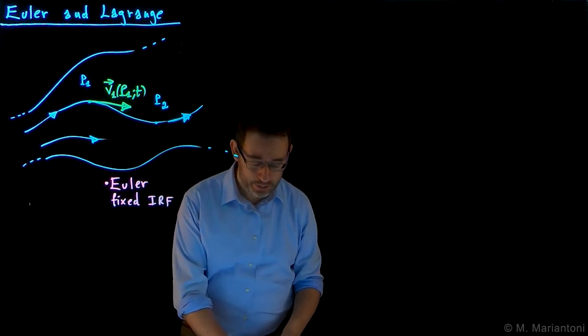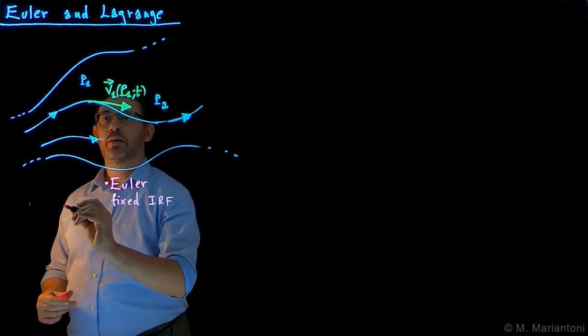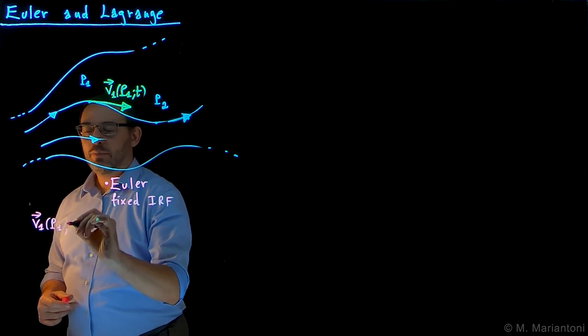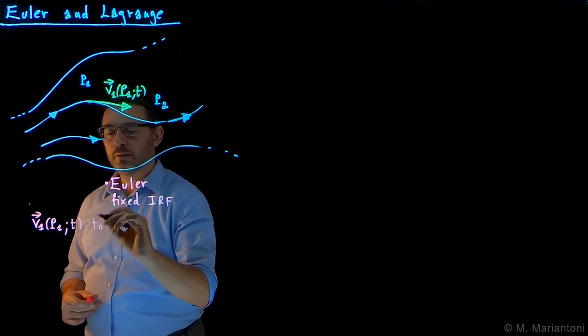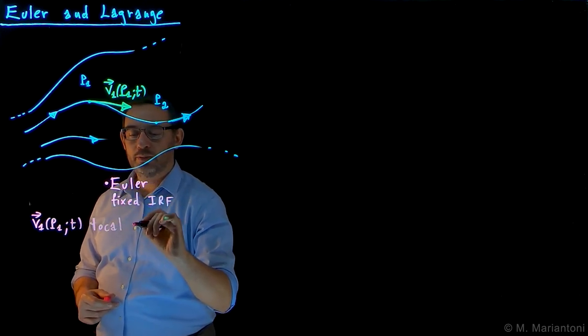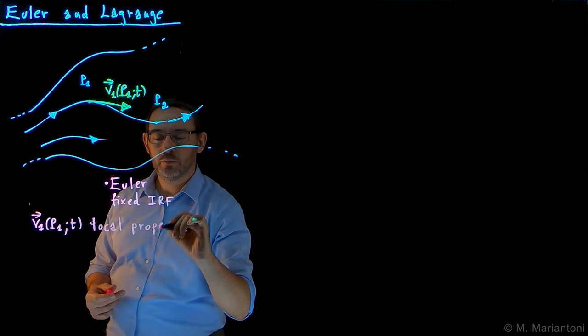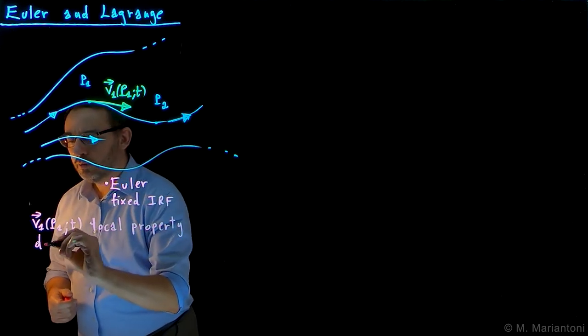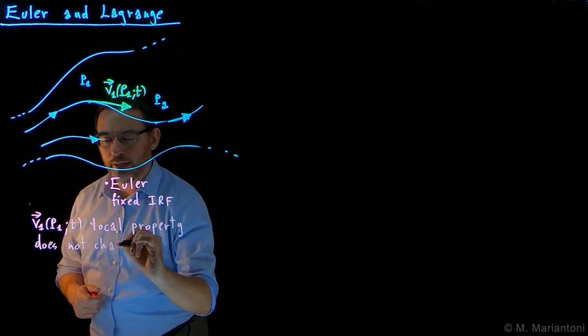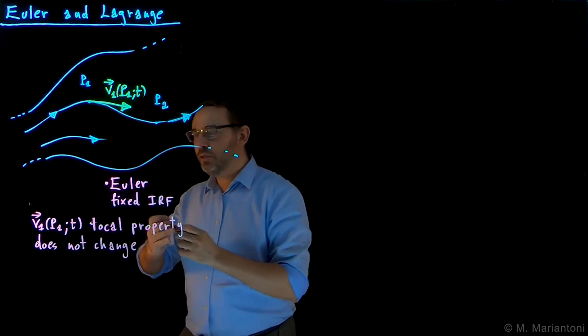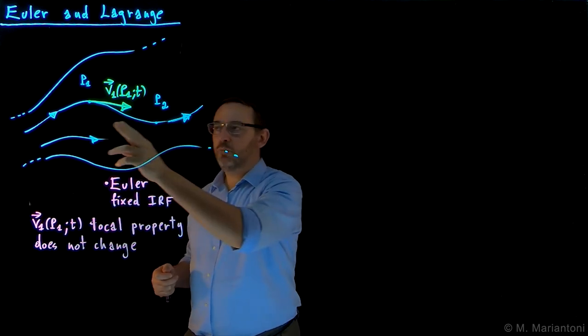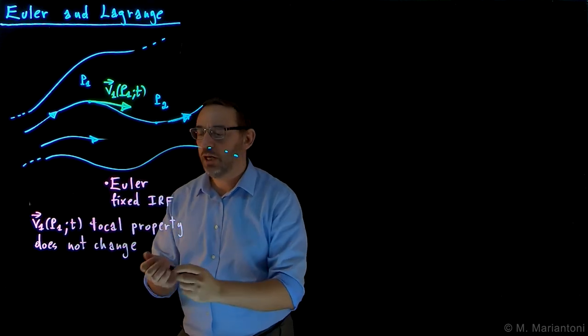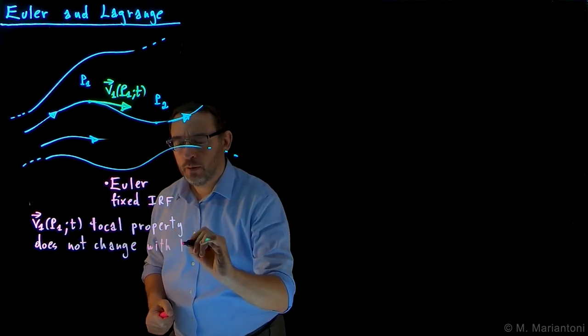So if I do so, and it so happens that in this Eulerian reference frame or frame of reference, all these velocities v1 at point capital P1 and time t, these are so-called local properties. So this is a local property of the system, it's one of the many local properties. So if this specific local property is such that it does not change with time, it's always the same. So in other words, if I do this, this means that all the many, many water molecules which go through this point, even though the molecule is different, their velocity at that point P1 is always the same, does not change with t.